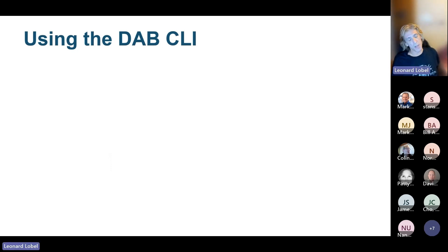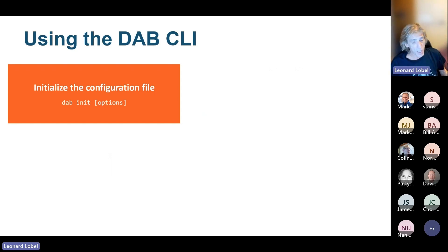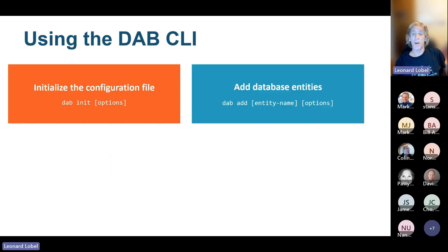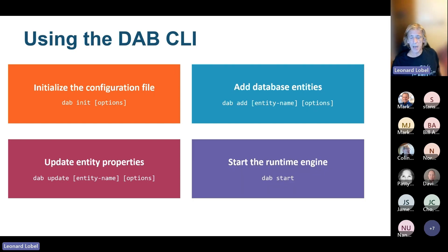The CLI allows you to manage a configuration file — initialize it, update it, and manage it, which is just a JSON file you can also edit by hand. You run dab init to create that configuration file. Then you list entities one at a time — every table, view, or stored procedure you want to expose, you call dab add. To make a change in permissions or security, it would be dab update. And when you're ready to start the runtime engine and host your API, just hit dab start and you're off to the races.